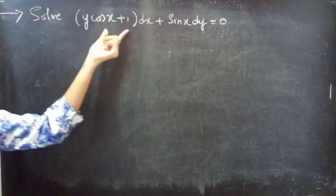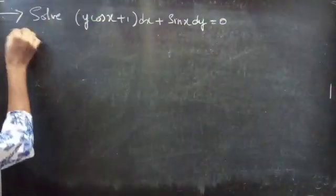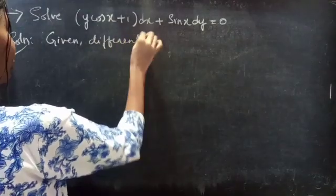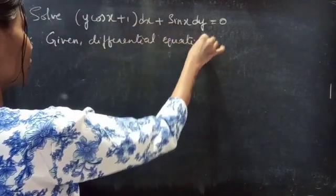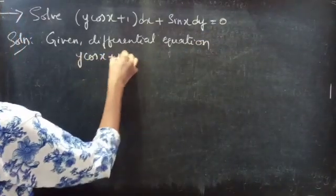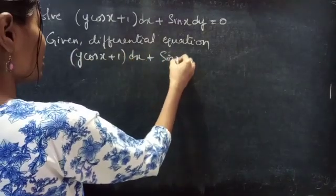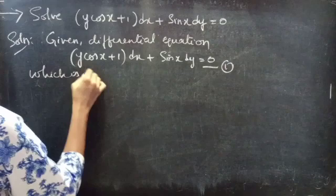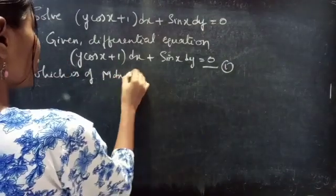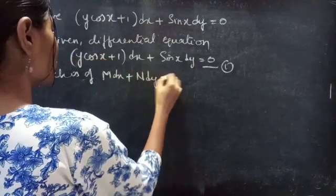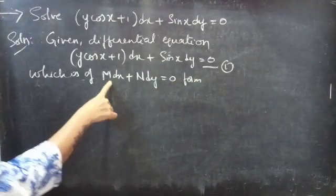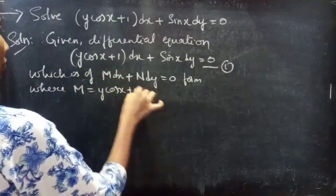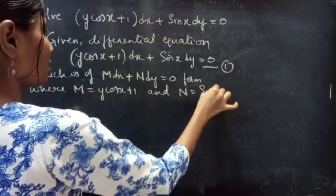Problem: solve (y cos x + 1) dx + sin x dy = 0. Given differential equation: (y cos x + 1) dx + sin x dy = 0. We will consider it as equation 1, which is of the form M dx + N dy = 0. By comparing these two we get M = y cos x + 1 and N = sin x.